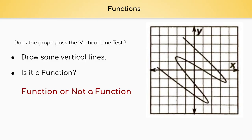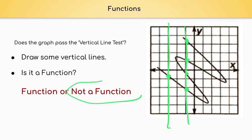Does this graph represent a function or not a function? Let's draw a vertical line — as of right now it only goes through one point. But if I draw a line through here, my vertical line hits the graph here, here, here, and here. So clearly our vertical line goes through more than one point. If our vertical line goes through more than one point, it is not a function.